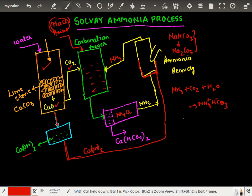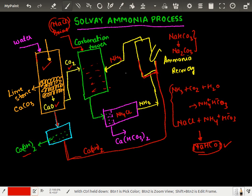So basically, ammonia is used to prepare the bicarbonate ion. Now, brine is entering the process. This brine solution — NaCl plus ammonium bicarbonate (NH4+ HCO3−) — gives us NaHCO3. The entire principle of the process is that sodium bicarbonate is sparingly soluble in water and therefore can be filtered off. This reaction is happening in a carbonation tower.